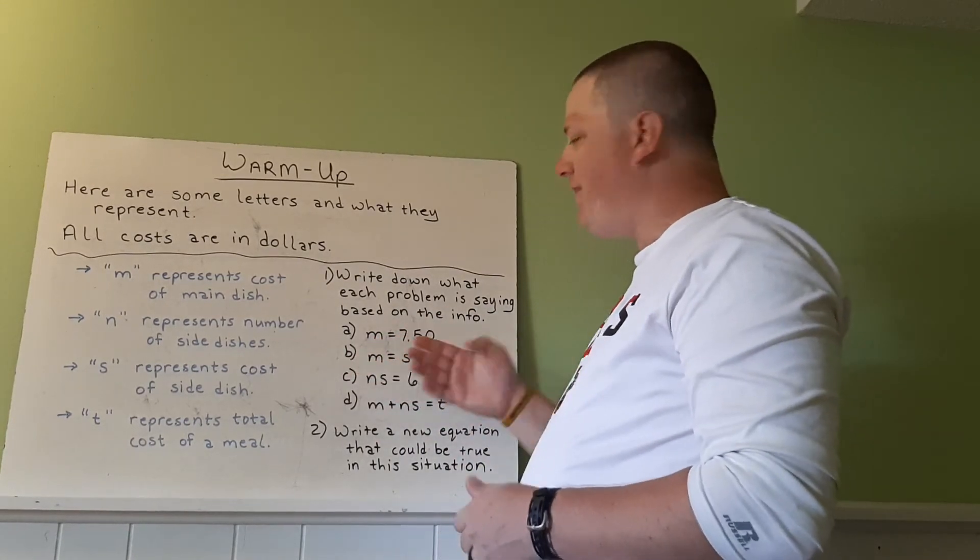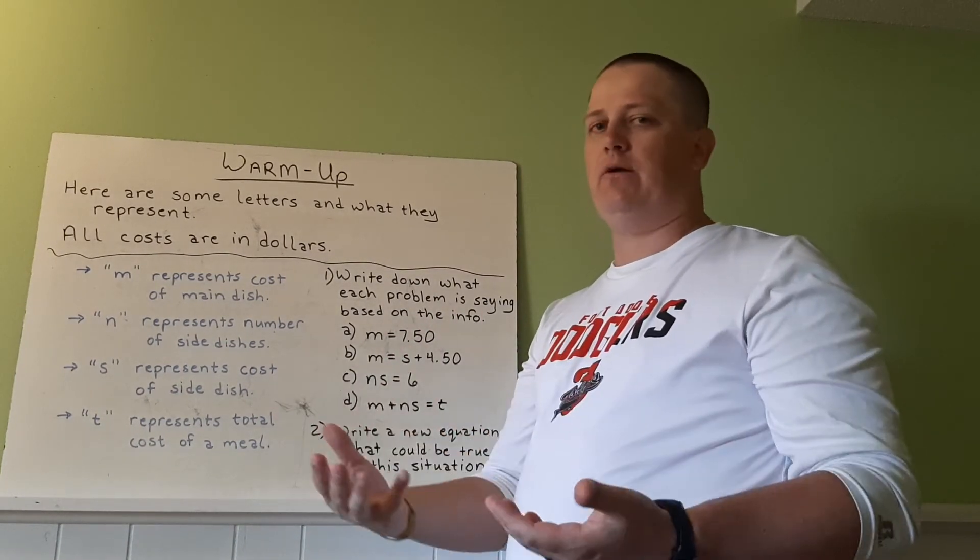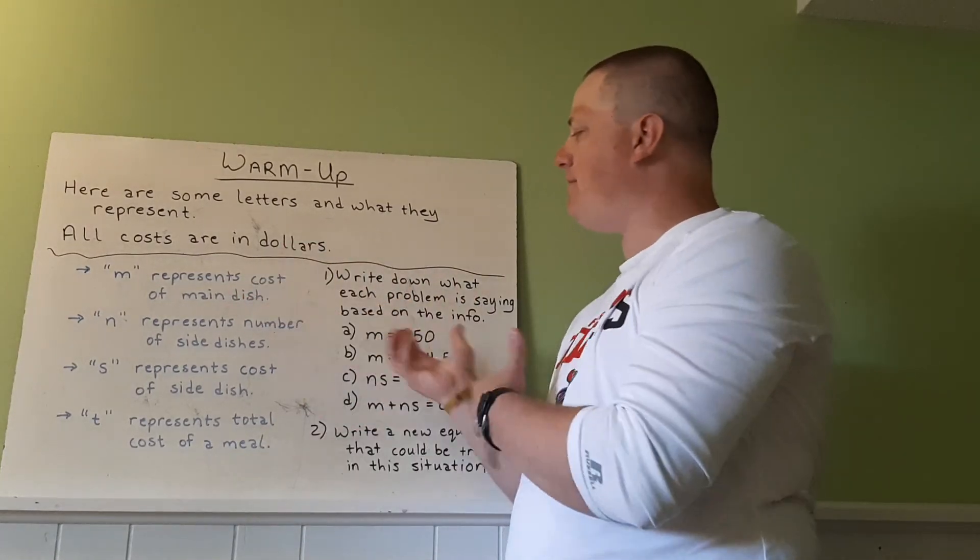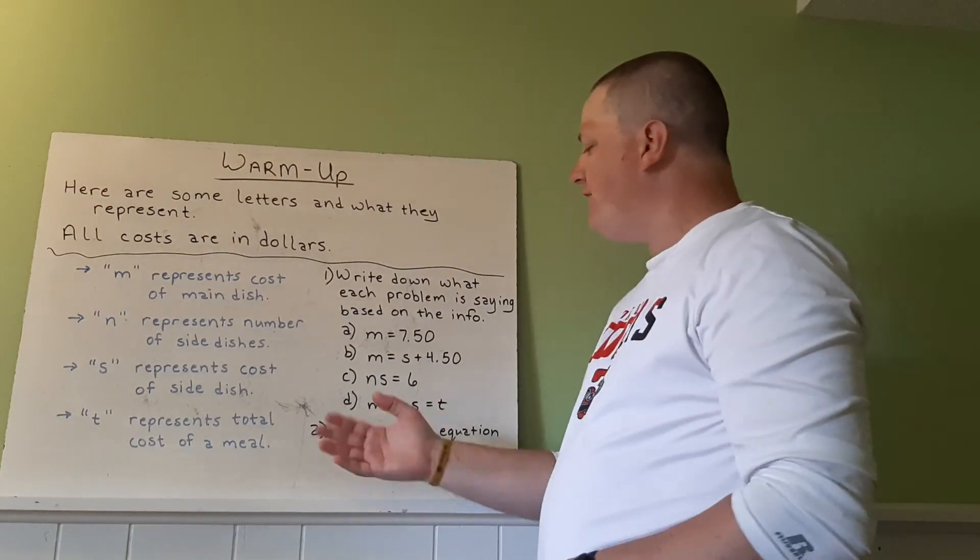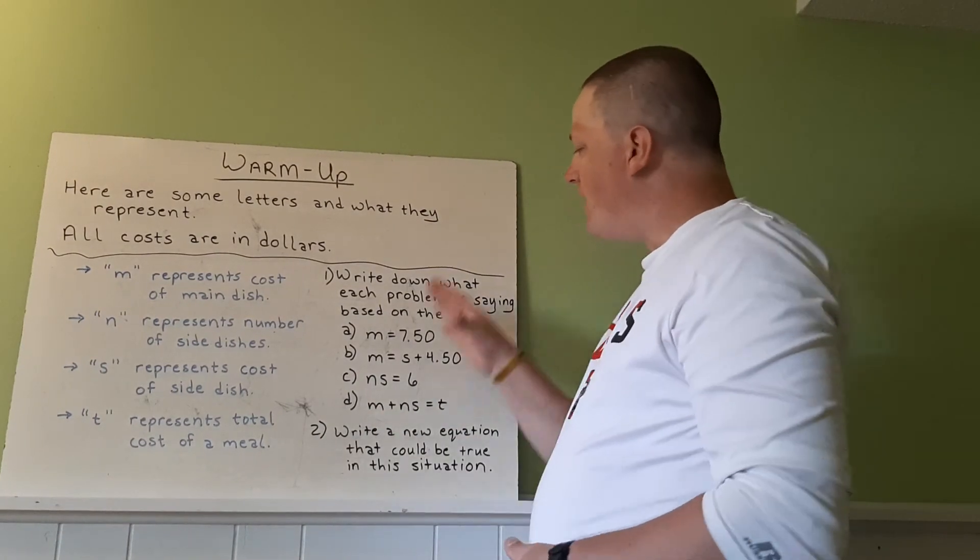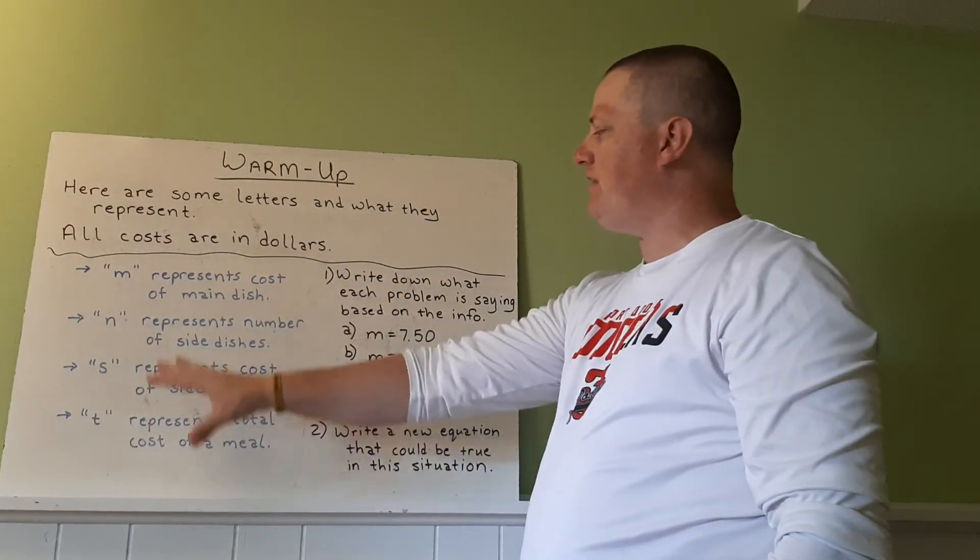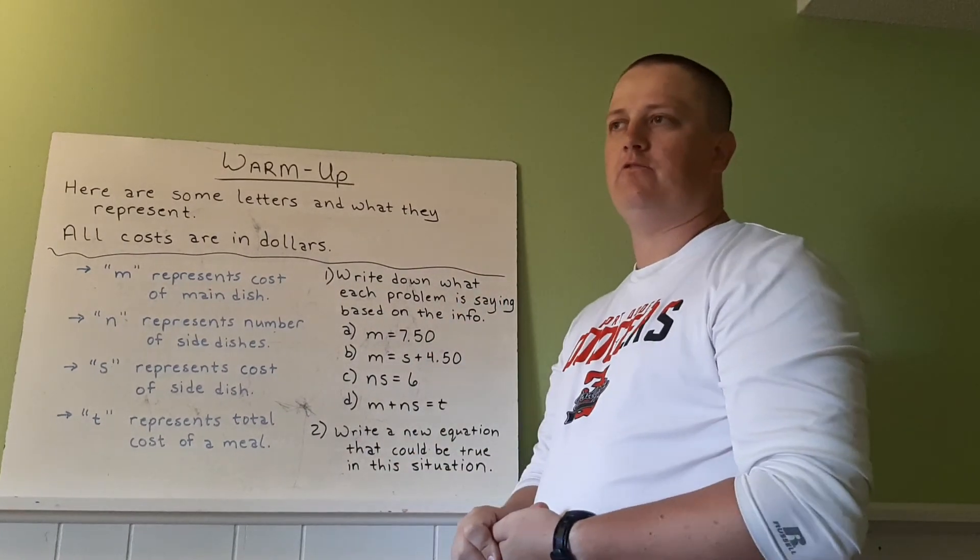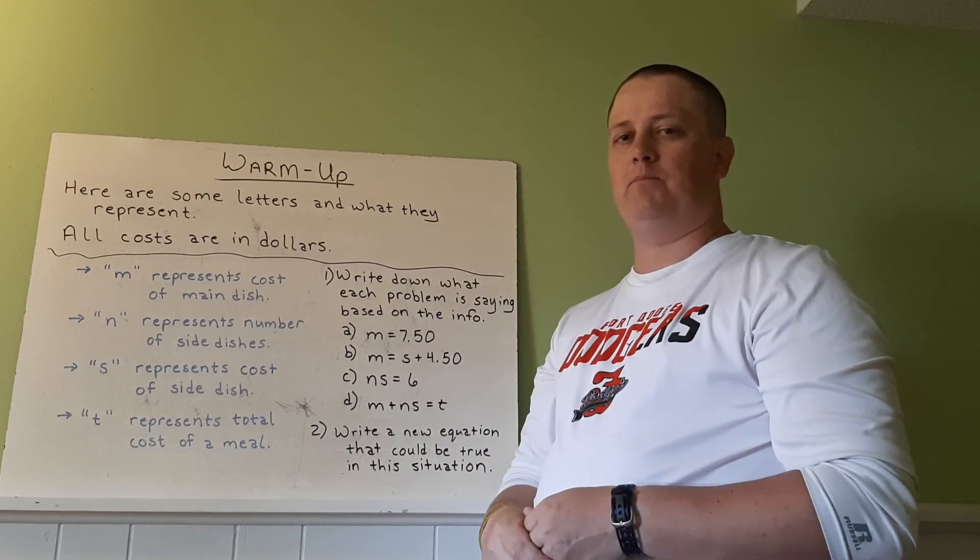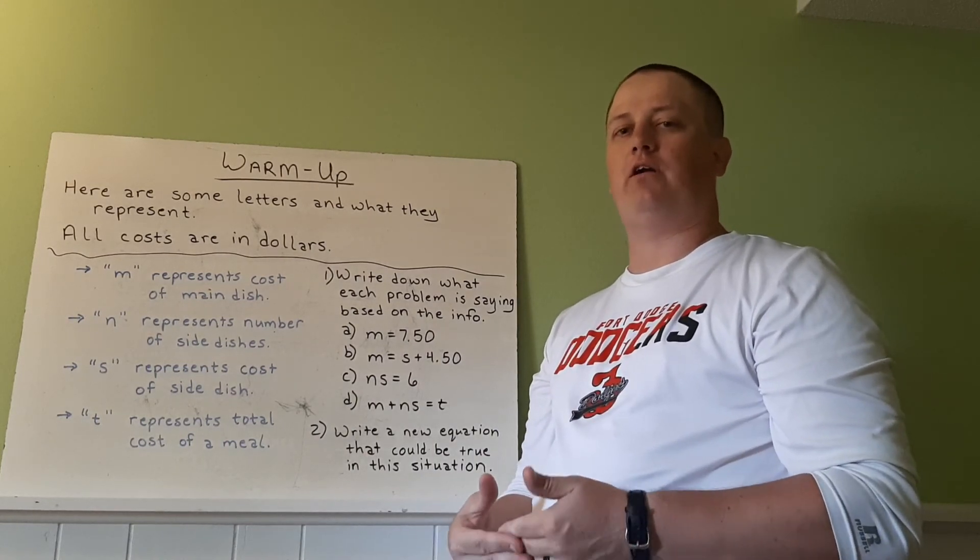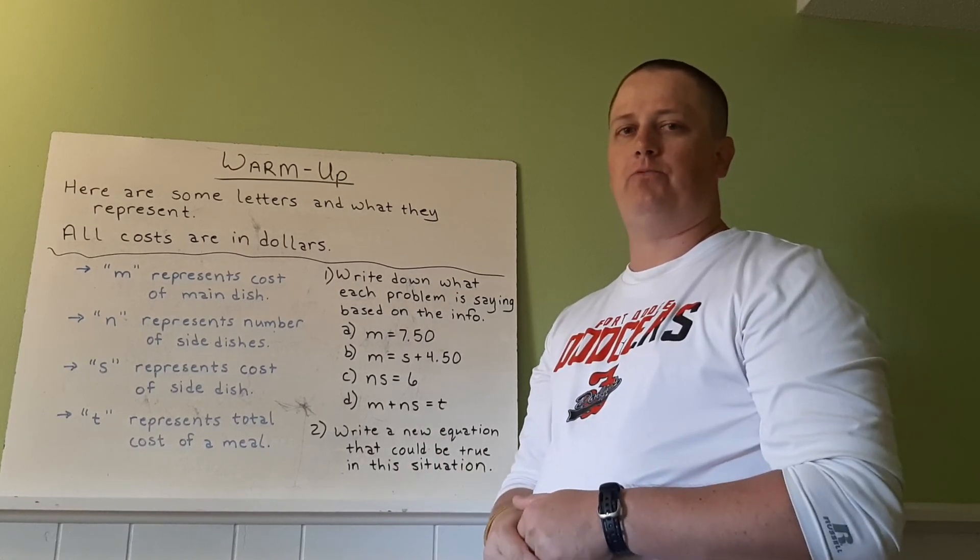So write out what these would be in words, you don't have to do any solving, you don't have to figure out that M equals this amount or S equals this amount, just write them in words. You're taking the math and turning them basically into a sentence. Second thing I'd like you to do is write your own mathematical problem for somebody else to figure out what it's saying. Using these letters and you can even use these problems to help you come up with it. All right, bring that work to class tomorrow. And that is how we will start our discussion at looking into constraints and writing problems to help solve things.